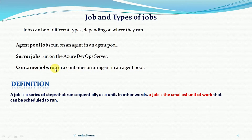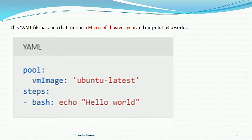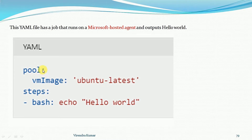The below YML file has a job that ran on the Microsoft-hosted agent and the output will be 'hello world'. This is a very simple job where we are not explicitly defining any job keyword — by default it's considered an implicit job definition. We define the pool with the VM image as Ubuntu latest, and then we have the steps which echo 'hello world' on the command prompt.